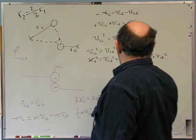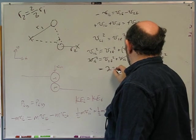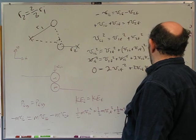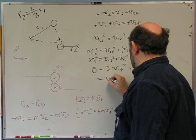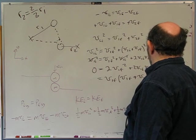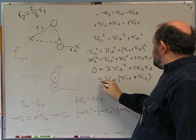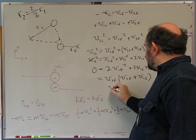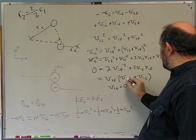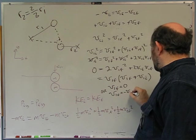Subtracting v1i² from both sides and factoring: 0 equals 2v1f² plus 2·v1i·v1f, which gives 0 equals v1f times (v1f plus v1i). So either v1f equals zero, or v1f equals minus v1i. If v1f equals minus v1i, that means the vector doesn't actually change — that's the ghost solution where the balls pass through each other without interacting.